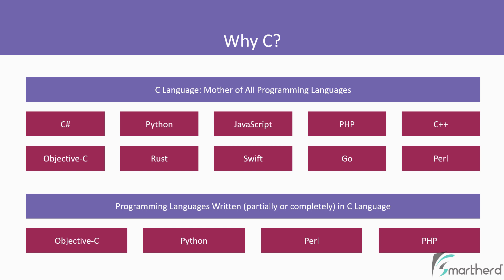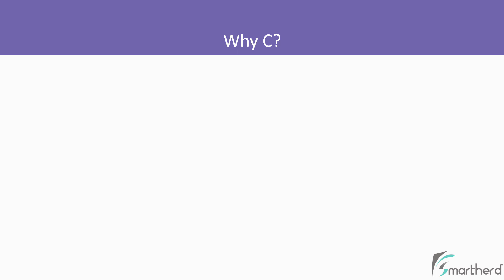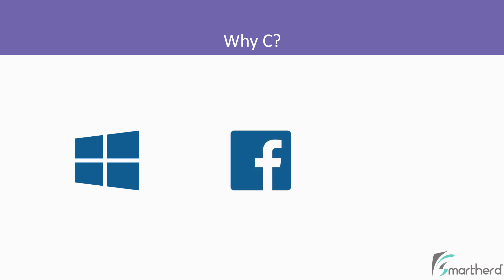So I hope now you understand the gravity of C language. Even today, many popular products use C as well as its derivatives such as C++. For example, the Windows operating system uses C and C++, a part of Facebook is built using C++, and popular applications such as Adobe Photoshop are entirely built using C++. And to learn C++, you need to first learn C programming language.